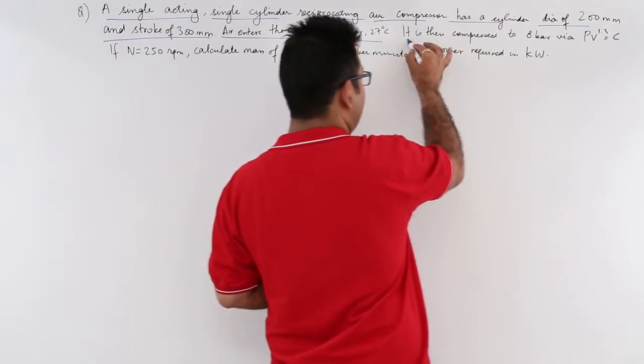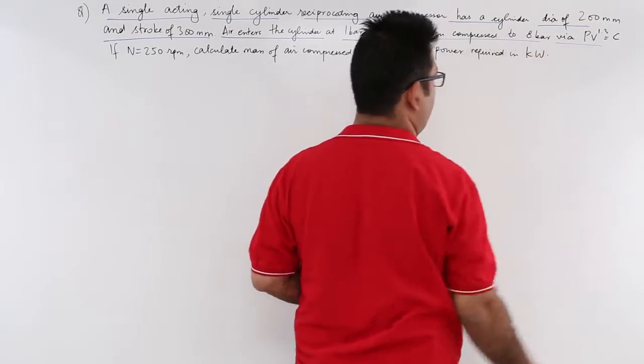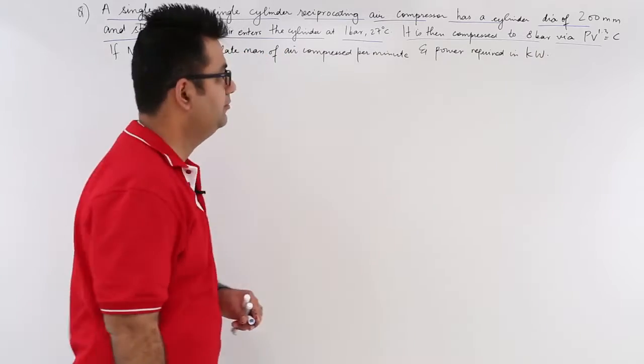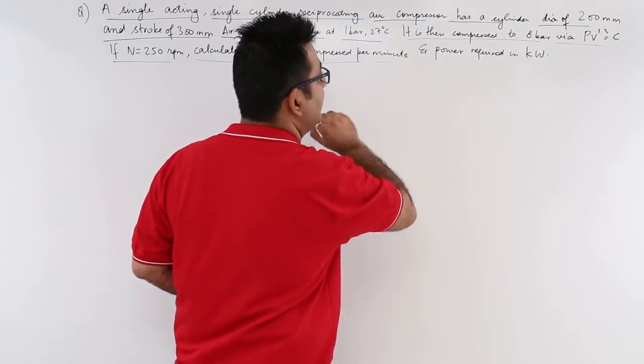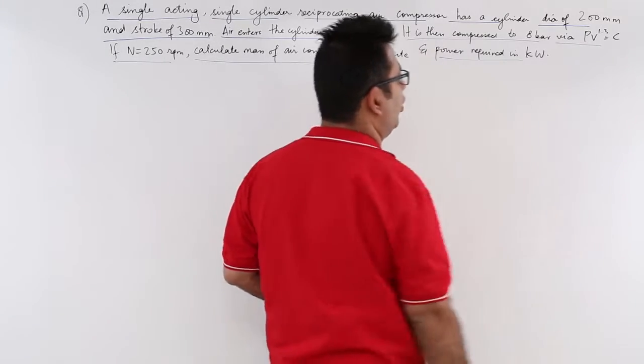It is then compressed to 8 bar via a polytropic process. If RPM is 250, find the mass of air compressed per minute and power required in kilowatts.